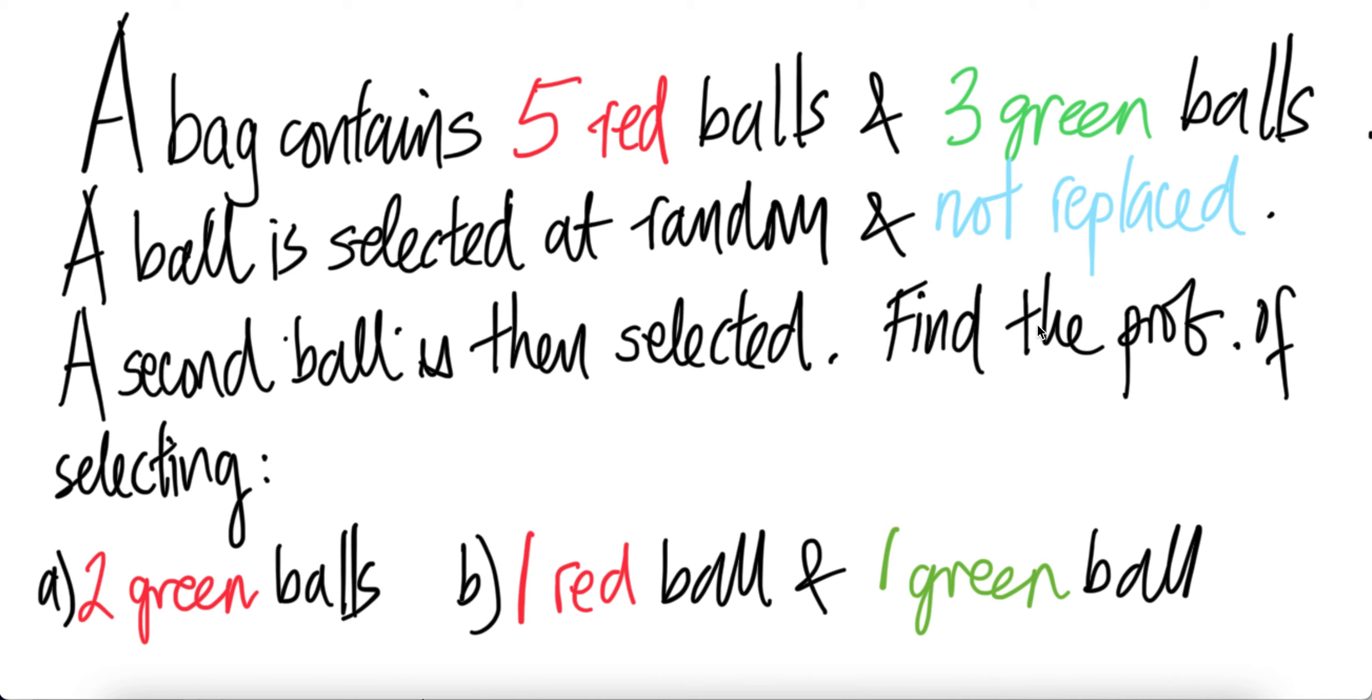Now a second ball is then selected. Find the probability of selecting two green balls, part A, part B, one red ball and one green ball.